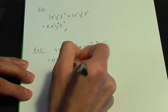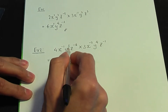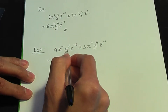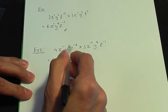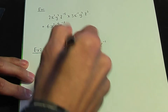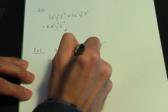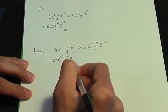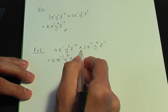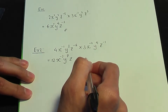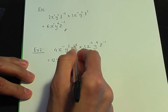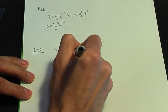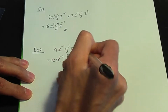Now let's concentrate on the y terms. y to the power 3 times y to the power 4 is y to the power 3 plus 4, since we're multiplying, which is y to the power 7. And finally, for the z terms, z to the minus 6 times z to the minus 1 is z to the power minus 6 plus minus 1, which is z to the power minus 7.